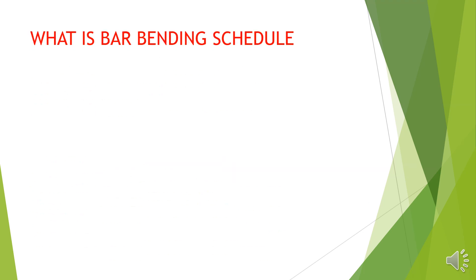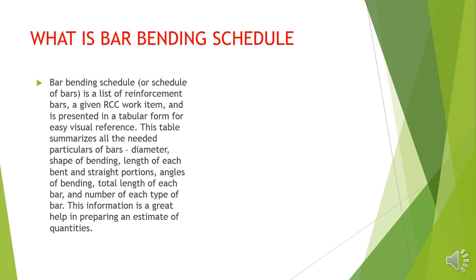Dear friends, today we are going to talk about a barbending schedule of the Y-shaped columns. A barbending schedule is a list of reinforcement bars of a given RCC work item and is presented in a tabular form for easy visual reference. This table summarizes all the needed particulars of the bars: diameter, shape of bending, length of each bend and straight portion, angles of bending, total length of each bar, and number of each type of bar. This information is a great help in preparing an estimate of quantities.